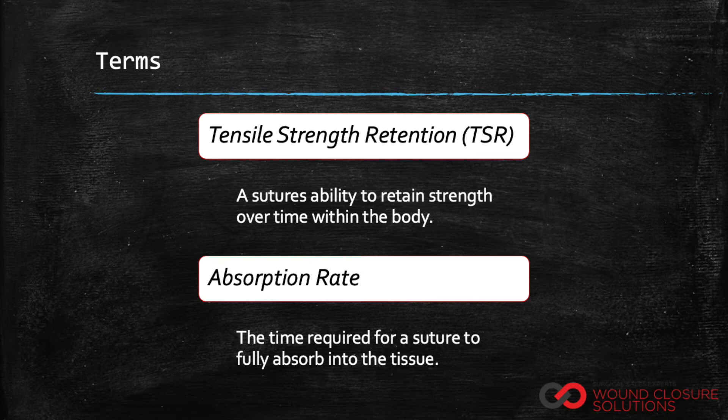A few terms to note before we begin. Firstly, tensile strength retention, also known as TSR, is a suture's ability to retain strength over time within the body. Secondly, absorption rate is the time required for a suture to fully absorb into the tissue.